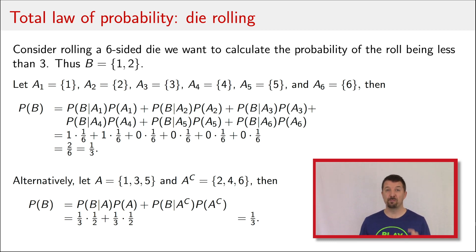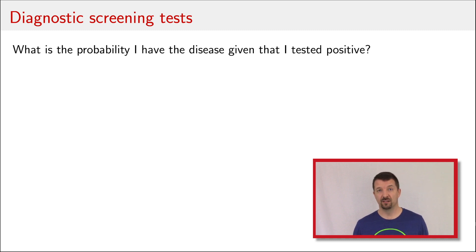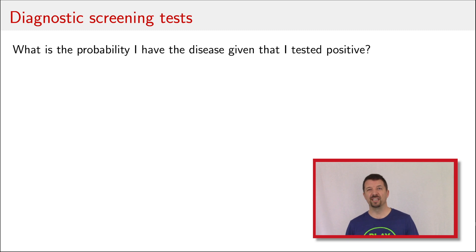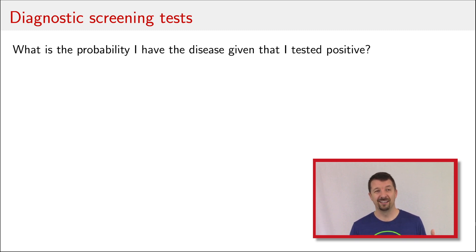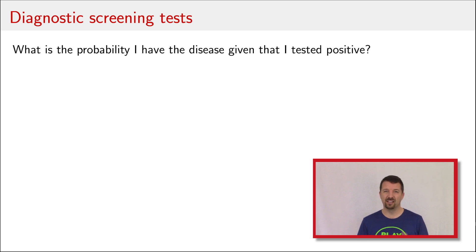Now let's get on to a more applicable example. This example is about diagnostic screening tests — a test where you go to the doctor and they run tests just to see if they find anything. You went to the doctor and got the result back that it was positive, which in medical parlance means it's more likely that you have the disease. Most likely you're freaking out. But what's the probability that you have the disease given that you tested positive?